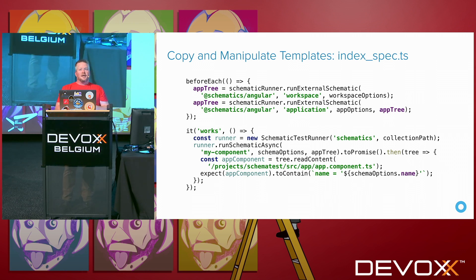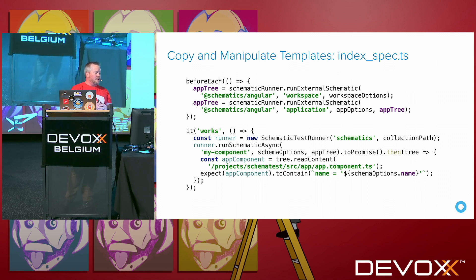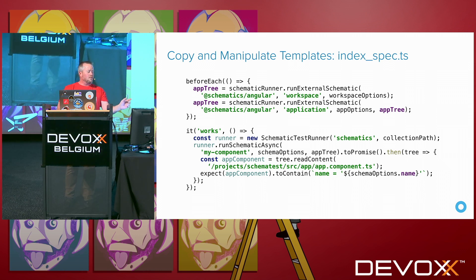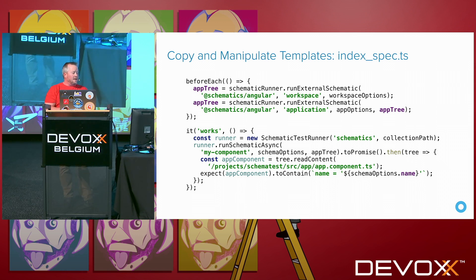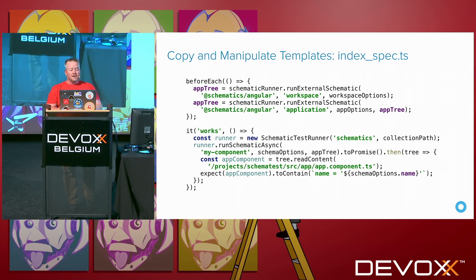To test that these templates are working, you write a test. In the beforeEach you set up the workspace and run Angular CLI — Angular CLI is all based on schematics, which is how the project came to be. We run that to create an application for us, then run our schematic and verify the file was created with the correct name in its contents.